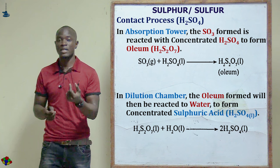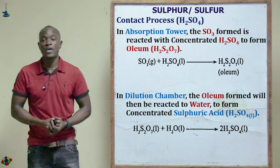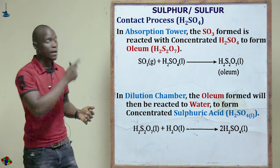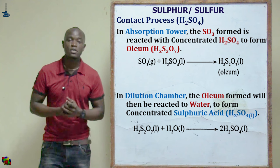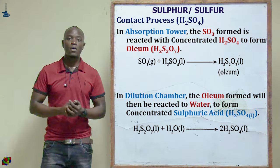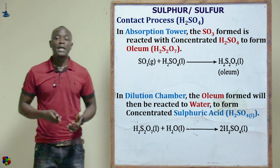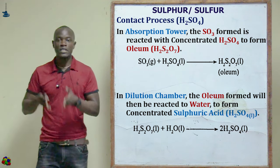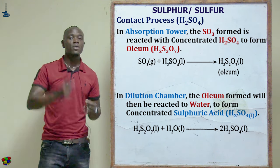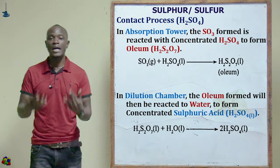SO₃ is reacted with concentrated sulfuric acid to get oleum: SO₃ + H₂SO₄(conc.) → oleum (H₂S₂O₇). The oleum is then dissolved in water, producing minimal heat, which encourages a higher yield of concentrated liquid sulfuric acid.